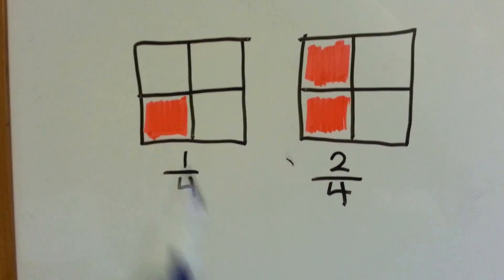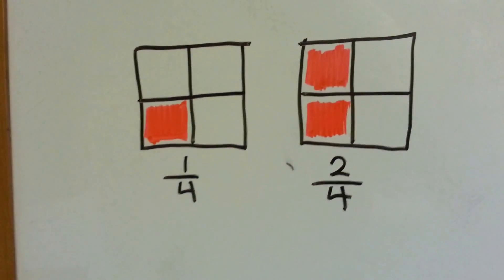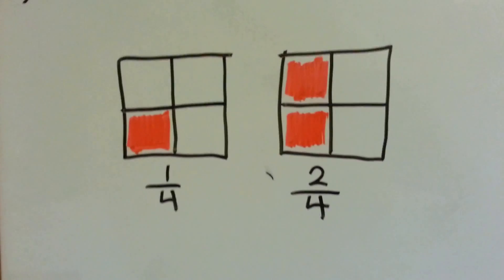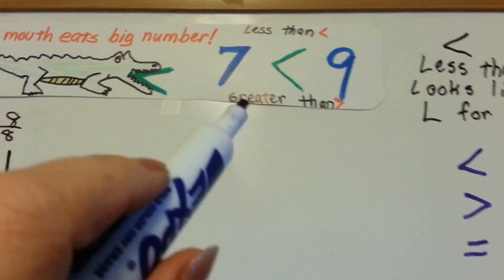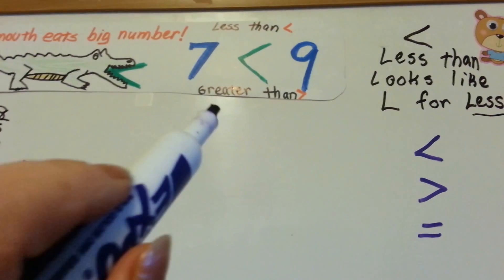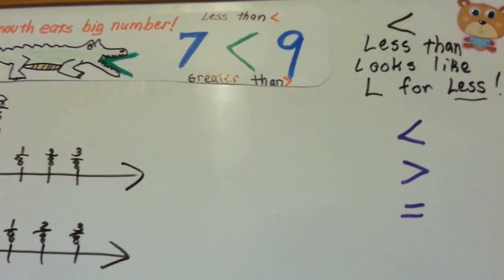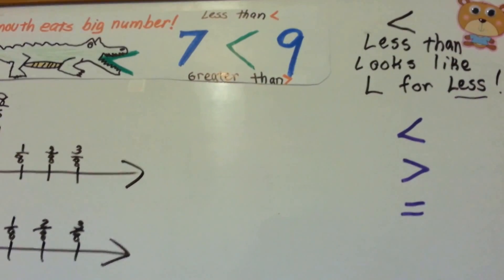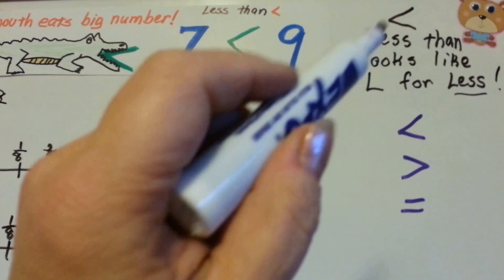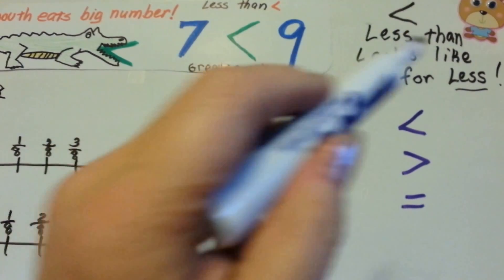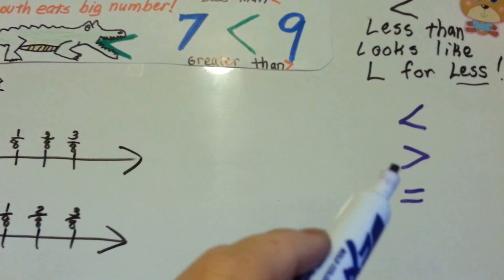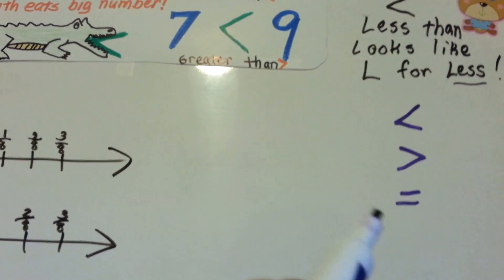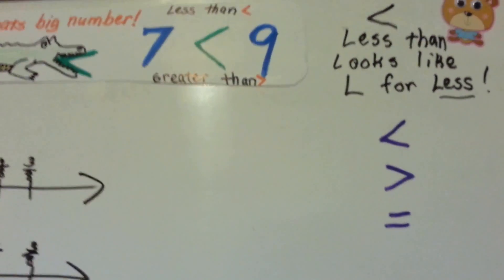It's got two parts colored in, and that one's only got one part colored in. To compare them, we need to use the big mouth to big number — less than, greater than, or equal to. Remember, the way you can remember less than is that it looks like an L — L for less. This is greater than, and this one is equal to.